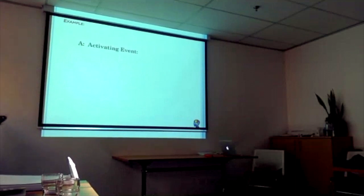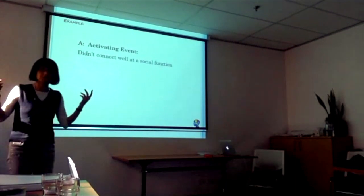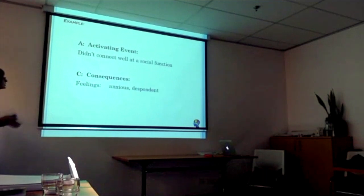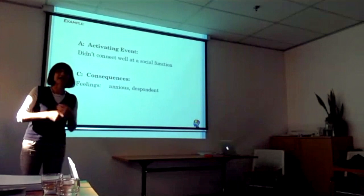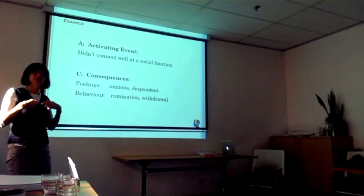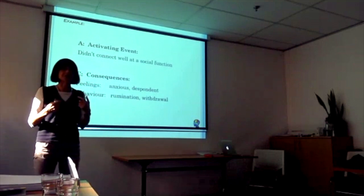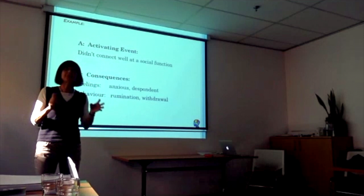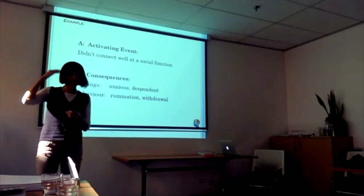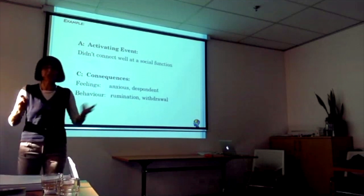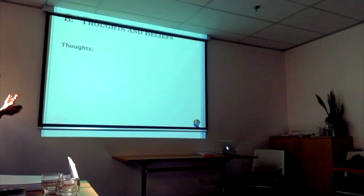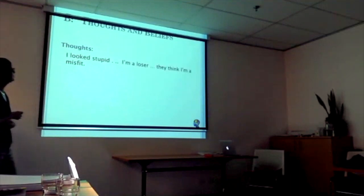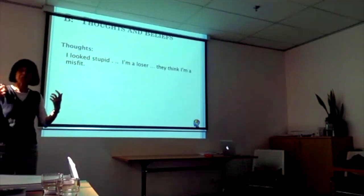For example, the activating event is not connecting well at a social function — something most of us experience at some stage. Going straight to C, the consequences: you feel anxious, a bit despondent, and behaviours might include withdrawal. We now actually classify rumination as a cognitive behaviour — something we do with our mind in response to an event. Rumination is that process of regurgitating and overthinking things. The thoughts at B might be: 'I look stupid, I'm a loser, they think I'm a misfit' — all sorts of negative thoughts about that situation.